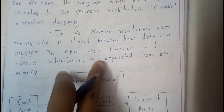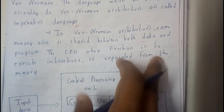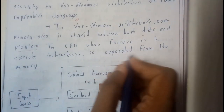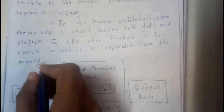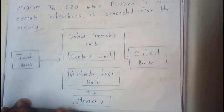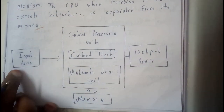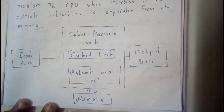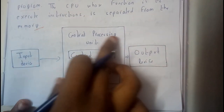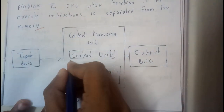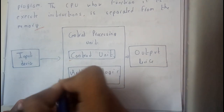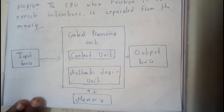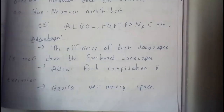The CPU, whose function is to execute instructions, is separated from the memory. If you draw a block diagram, it will have input on one side, output on the other side, and memory on the lower side. The CPU contains a control unit and can perform arithmetic and logic operations.